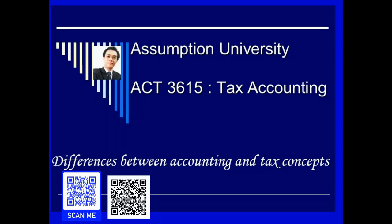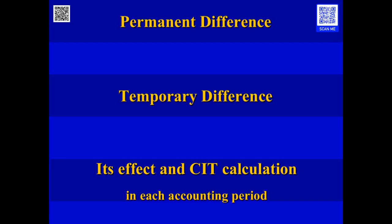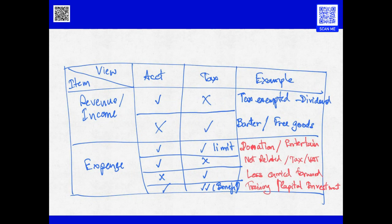In this part, we will talk about the difference between the meaning of temporary difference and permanent difference. We already know that the calculation of net profit has different assumptions for accounting and for tax. So we have to find out the difference between accounting and tax, and identify whether each item will be a permanent difference or a temporary difference.